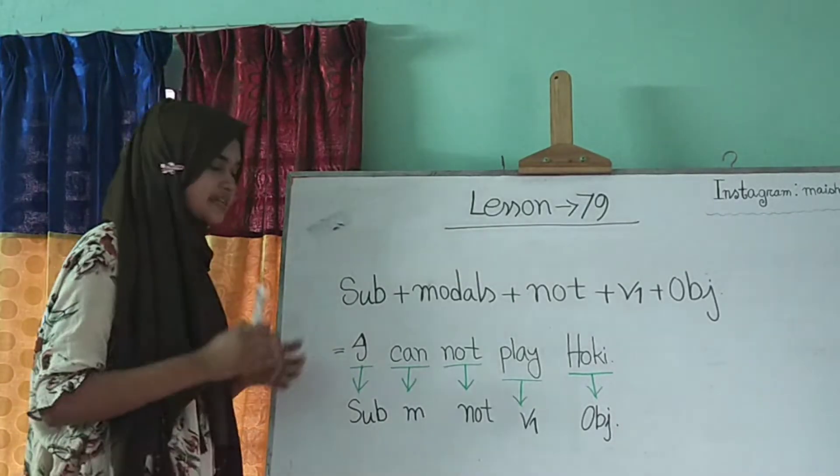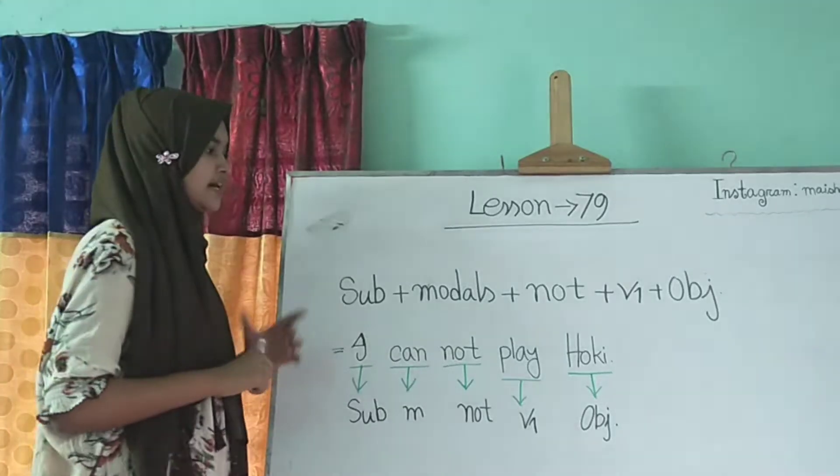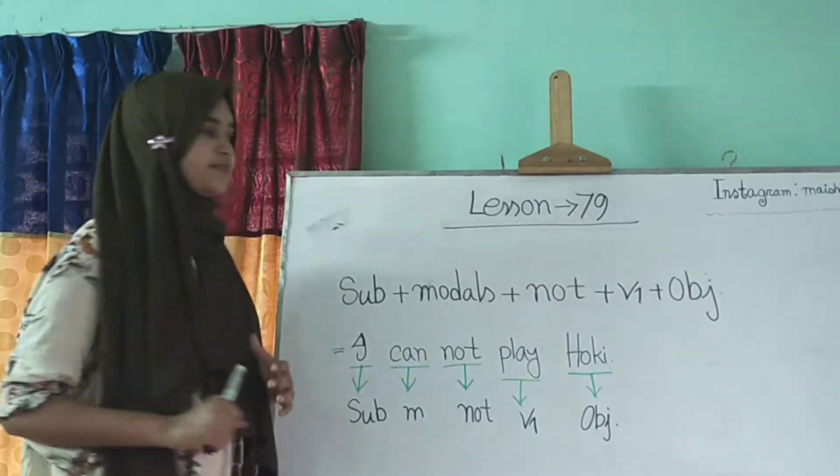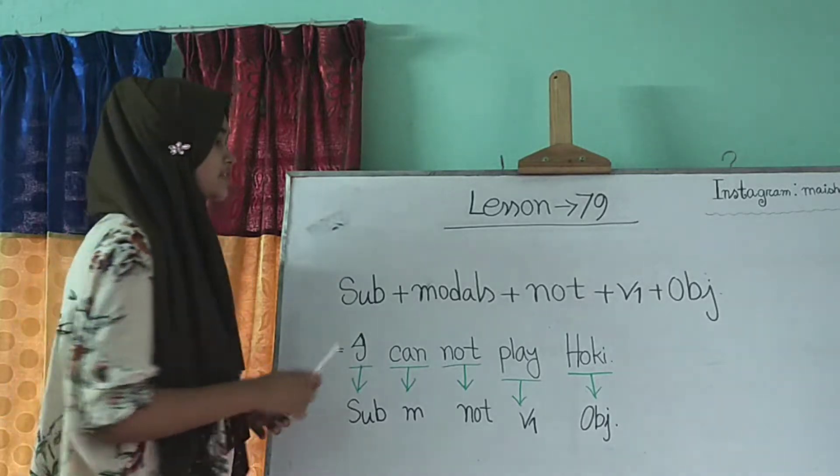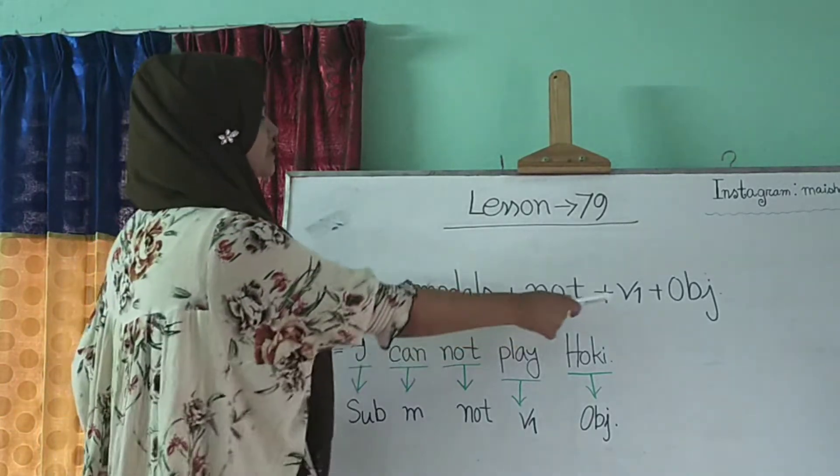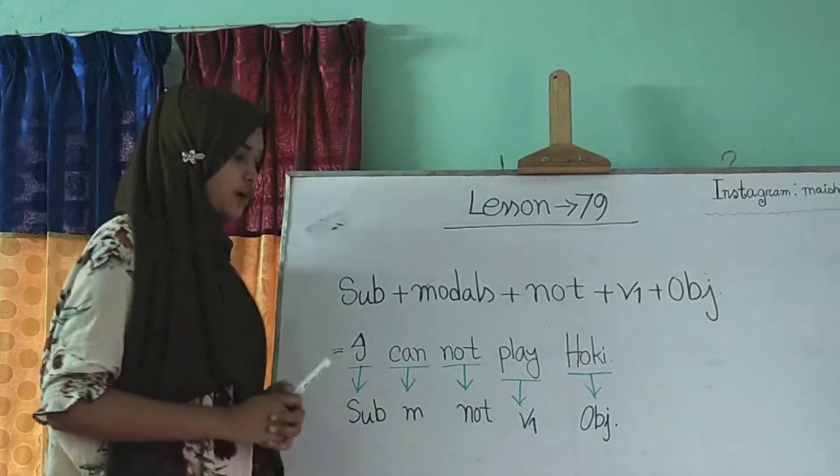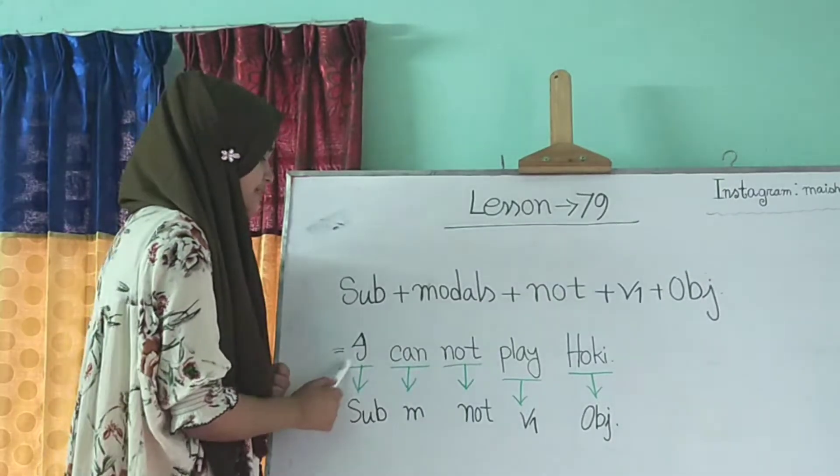So again let's repeat our today's class. You know today's class we have learnt a structure that will help us to make sentences in model negative one. So subject plus model plus not plus verb one and then object.